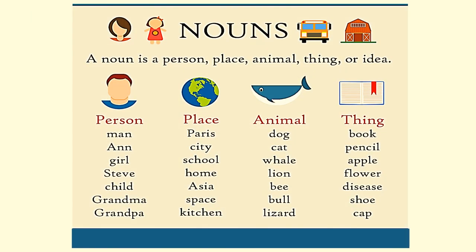So, we have learned that a noun is a person, place, animal, thing, or idea. A person — like man, girl, child. A place — like paddy, city, space, kitchen. An animal — like dog, cat, lion. A thing — like book, pencil. These are all called nouns because all are naming words.